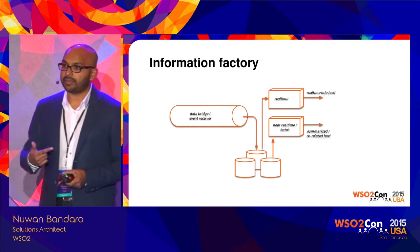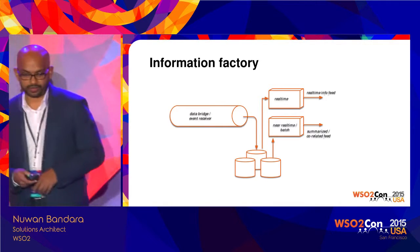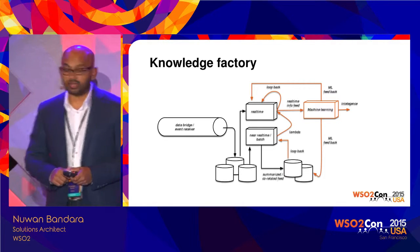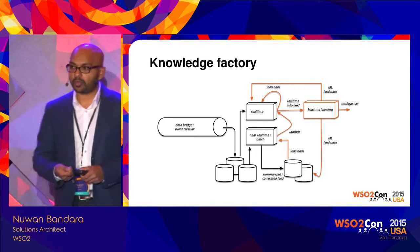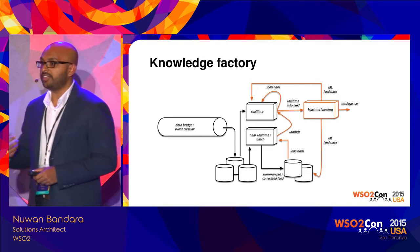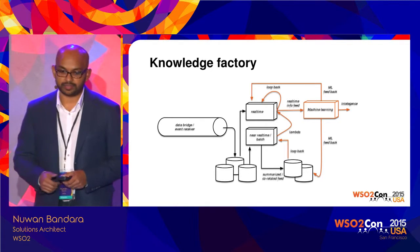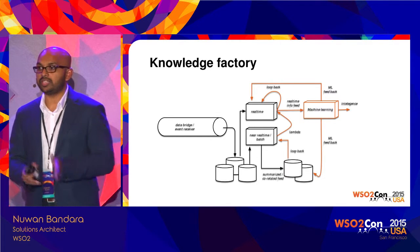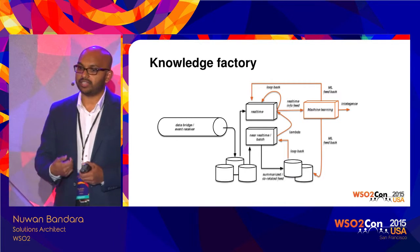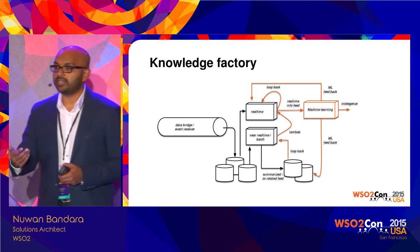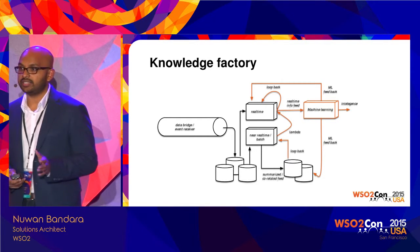The information factory creates information out of this data, as you can see in this diagram. Then we have the knowledge factory, which takes this information and makes knowledge out of it. We have a machine learner with models deployed — you can run those models and get predictions and decisions. The summarized information that goes into the summarized database can also feed back to the real-time engine — that's the lambda architecture, where you do real-time processing and refer to summarized historical data tables.